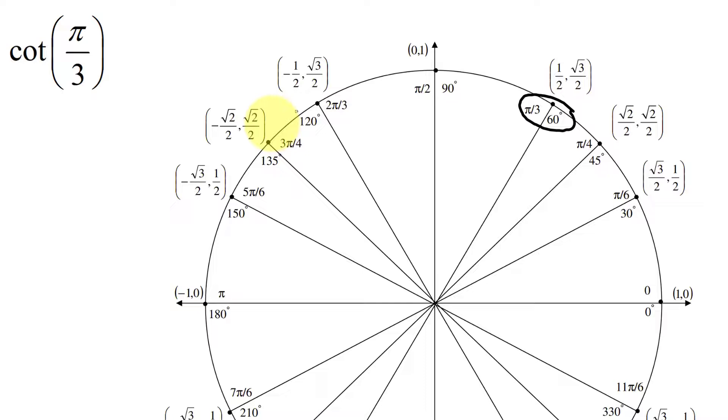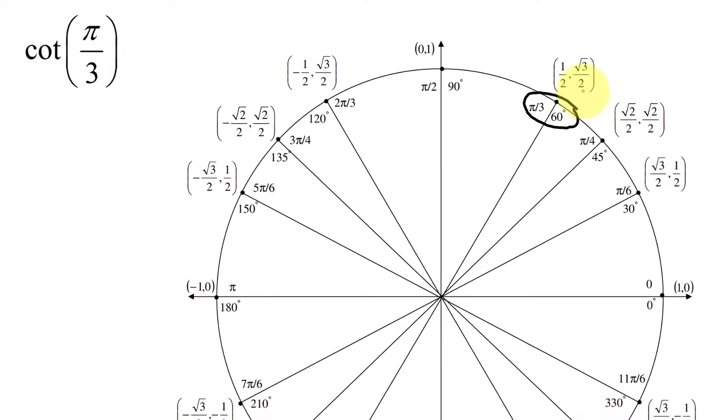And remember, for every point on the unit circle, the x-coordinate is the cosine of the angle, and the y-coordinate is the sine of the angle.